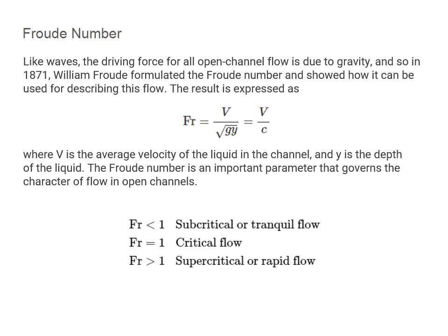Like waves, the driving force for all open channel flow is due to gravity. In 1871, William Froude formulated what is known as the Froude number and showed how it can be used for describing this flow. The Froude number is expressed as V divided by the square root of g times Y, or equivalently as V over C, where V is the average velocity of the liquid in the channel and Y is the depth of the liquid. The Froude number is an important parameter that governs the character of flow in all open channels.